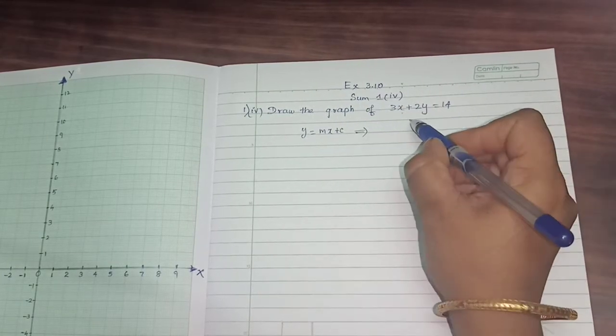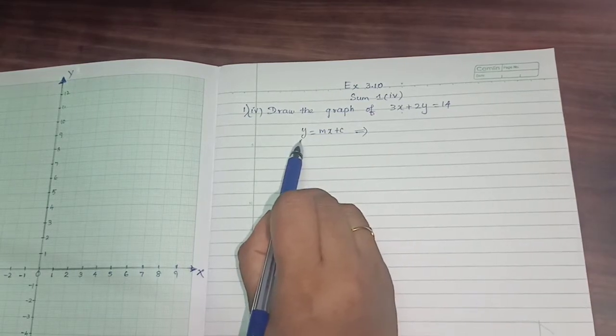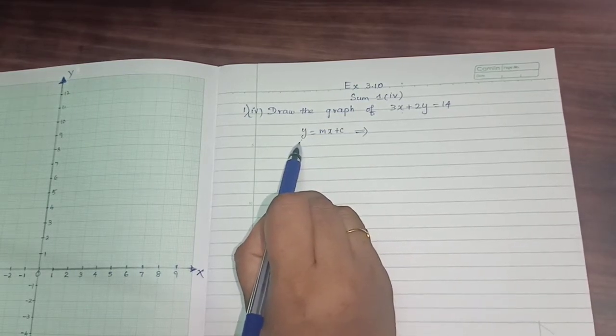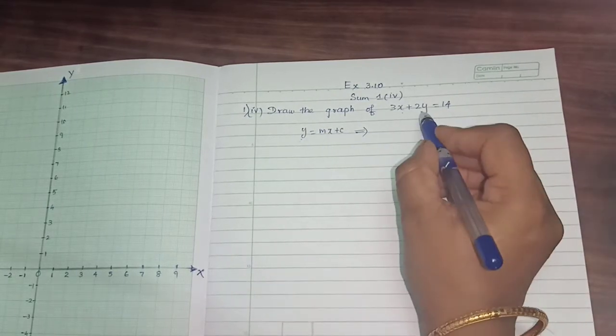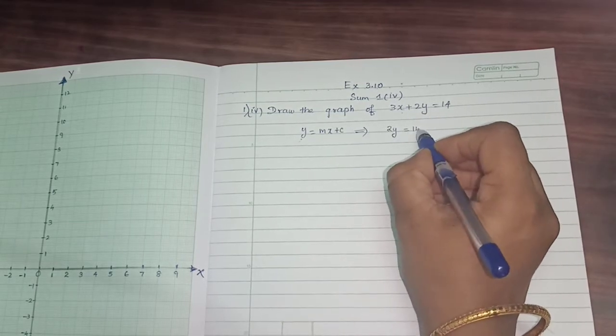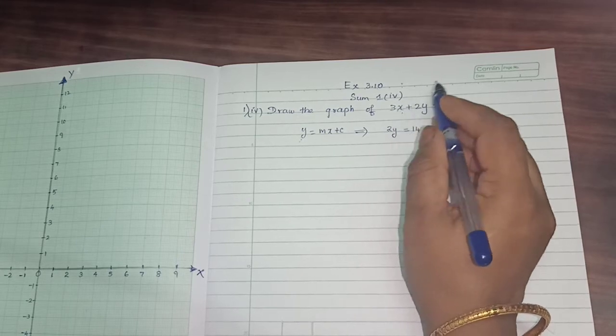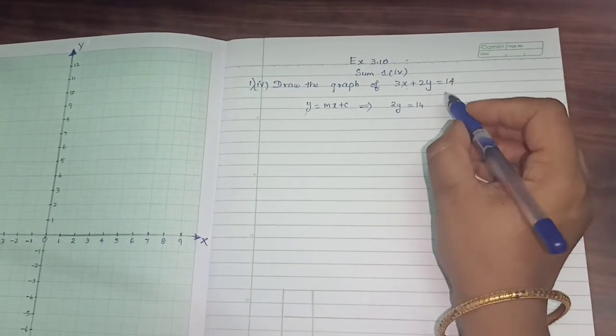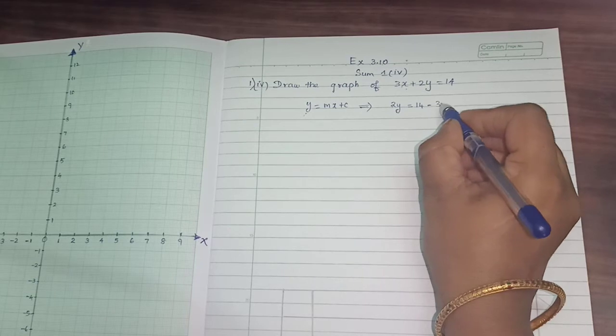So how it will be? This left hand side, we should want only y. So I am keeping y in this equation. 2y here is equal to 14. I am transposing this 3x on the right side. So what will happen? 14 minus 3x.